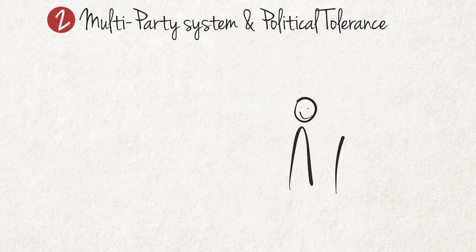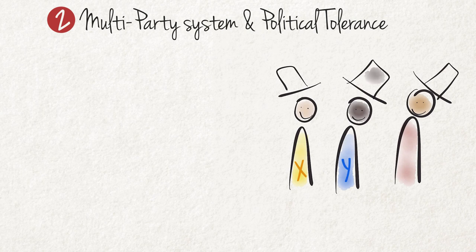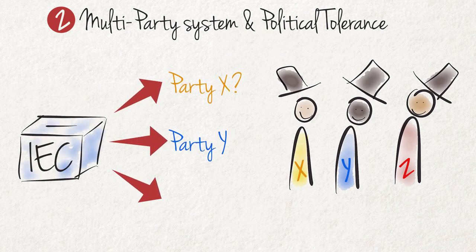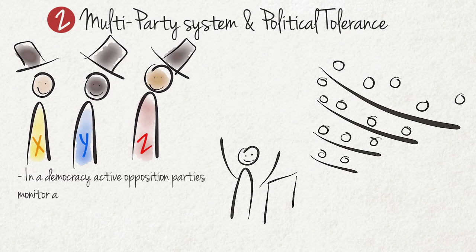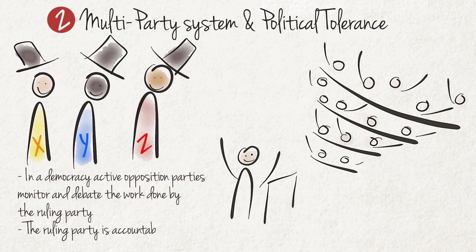The second key feature is a multi-party political system paired with a tolerance for different political views. A multi-party system, or at least a two-party system, is an important component of any democracy. The presence of multiple strong political parties contesting elections ensures a choice for voters and the representation of diverse and competing views and interests in parliament. In a democracy, active opposition parties monitor and debate the work done by the ruling party, or ruling parties in the case of a party coalition. This can increase the ruling party's accountability to the electorate.